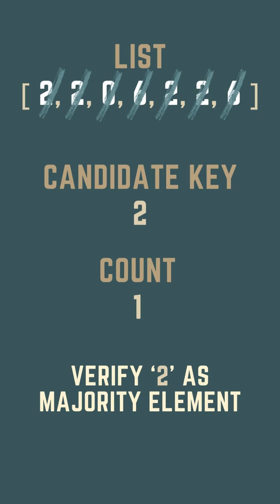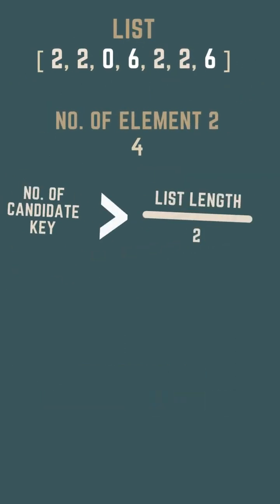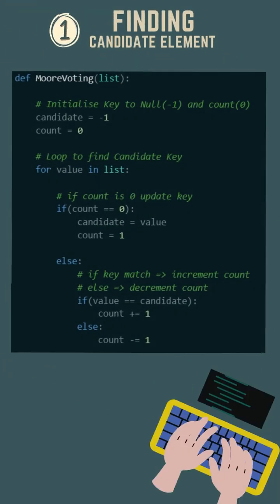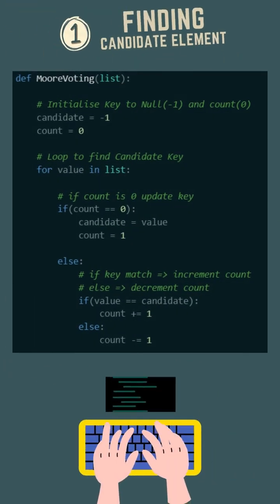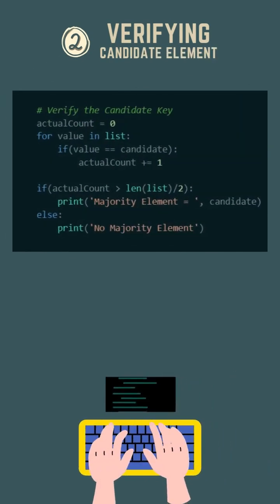If the occurrence of the candidate key is more than half of the list length, then it is the majority element. Otherwise, no majority element exists. This is the code snippet for the algorithm.